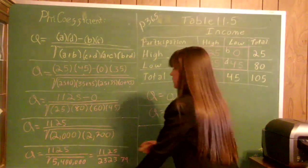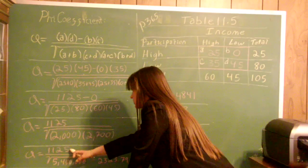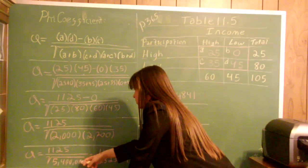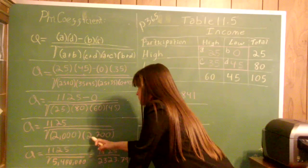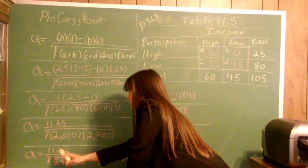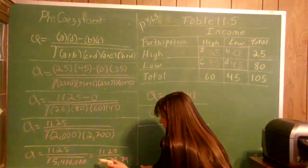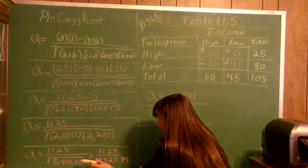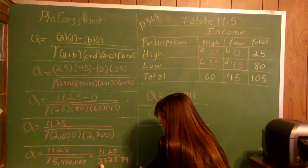The next step: the numerator is still 1,125, over the square root of 2,000 times 2,700, which equals 5,400,000. Then we take the square root of that: the square root of 5,400,000 equals 2,323.79.